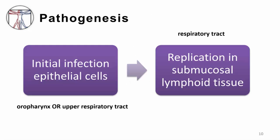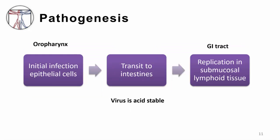Enteroviruses can infect both the GI and respiratory tracts. The virus is shed from the GI or respiratory tract and is immediately infectious. Initial infection occurs in the epithelial cells of the upper respiratory tract or oral pharynx, with local replication followed by infection of submucosal lymphoid tissue. If initial infection is in the gastrointestinal tract, replication occurs in the epithelial cells, new virus is shed and swallowed, and the virus — being acid stable — resists breakdown by stomach acid, moving into the intestines where it infects the submucosal lymphoid tissue, specifically the Peyer's patches.